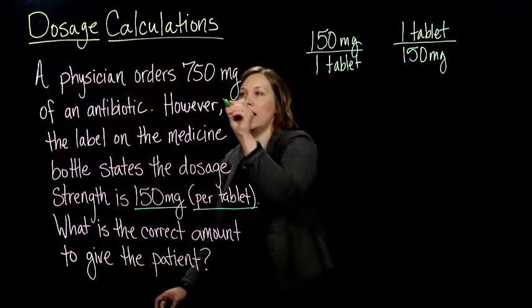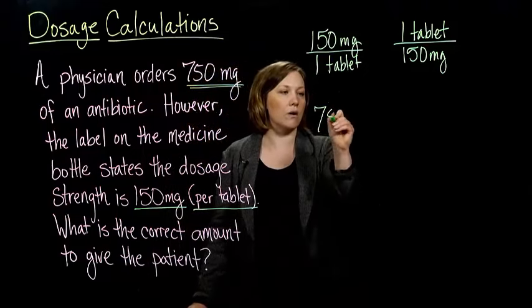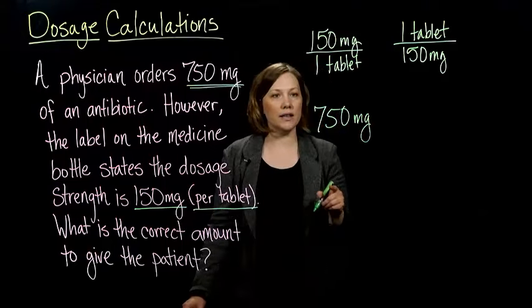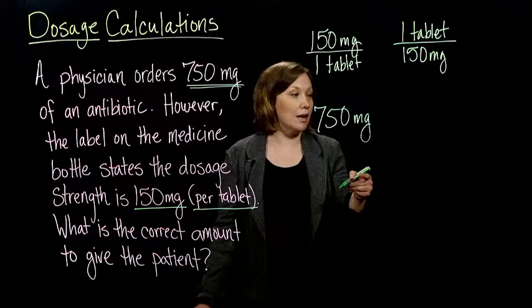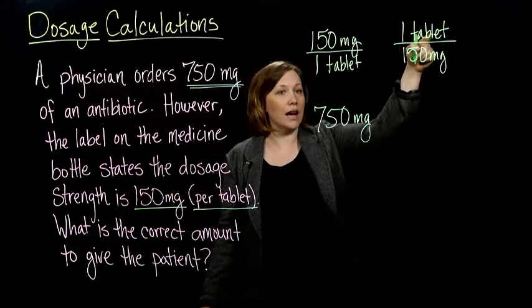Now, the other thing we have is the desired dose. That's how much we want to give. So we're going to write that down. We want 750 milligrams. But instead of in milligrams, we want it to be tablets. So which conversion factor should I use? Should I use the tablets on the bottom or the tablets on the top?